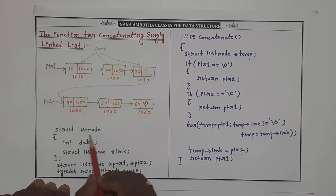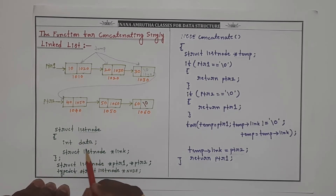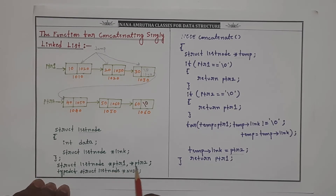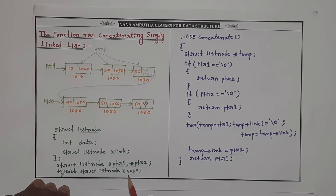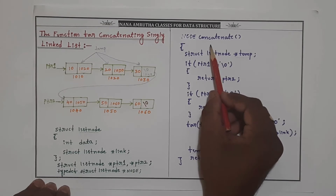In the code, we created a list node structure that contains two fields: a data field and a link field. We declared two pointers, PTR1 and PTR2 — PTR1 pointing to list 1 and PTR2 pointing to list 2. We also created a typedef struct list node, defining our own data type node of type structure. Then we write the concatenation function.